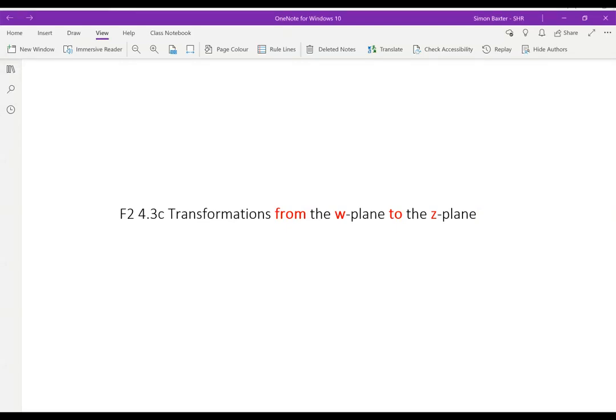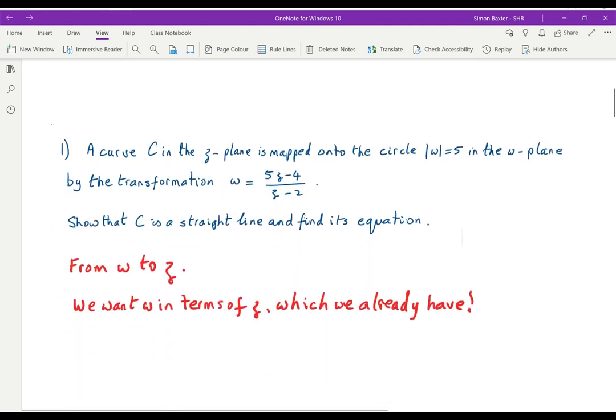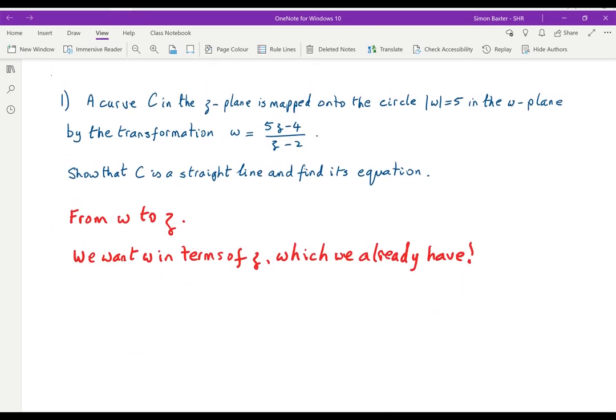In this video I'm going to look at transformations which go from the W plane to the Z plane. In the last video we looked at transformations going from the Z plane to the W plane. The two ideas are very similar and it's important that you shouldn't mix them up. In this case we know what's happening in the W plane, what is happening in the Z plane. That's what I mean by going from W to Z.